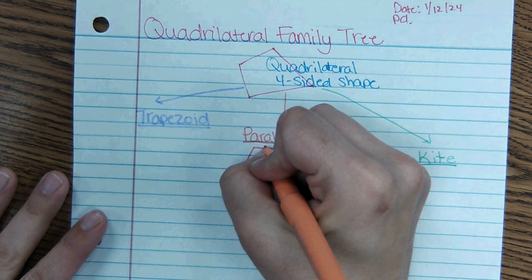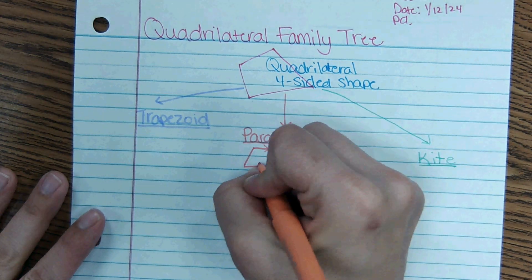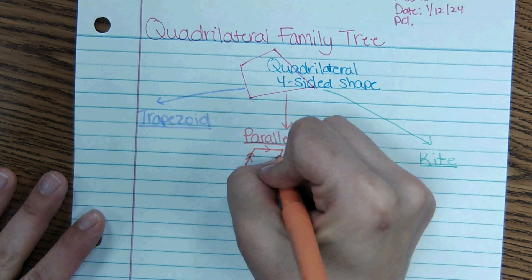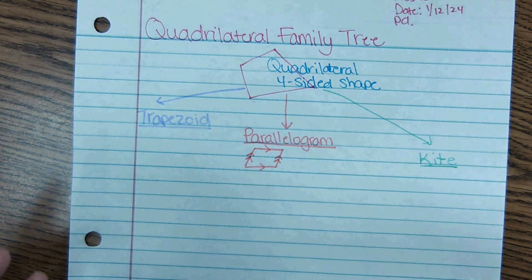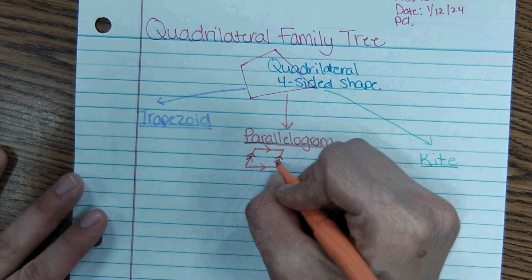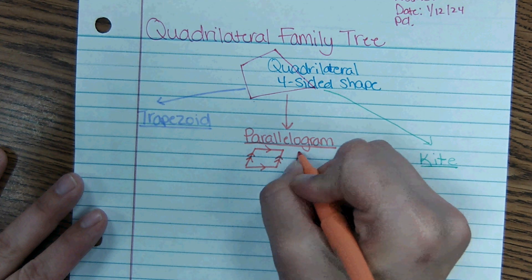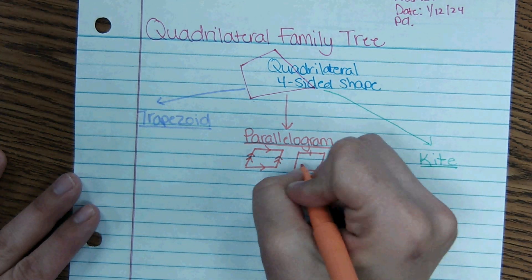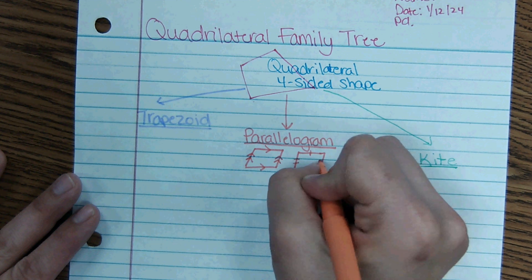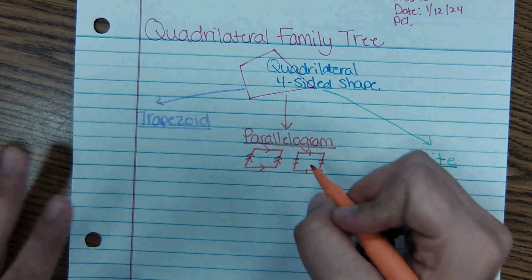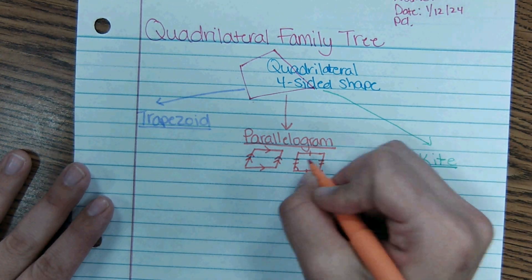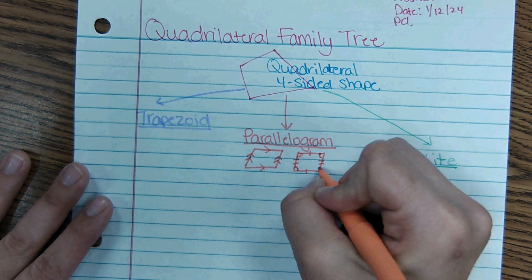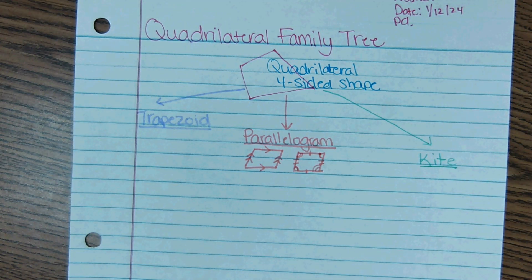A parallelogram is defined as a shape where the opposite sides are parallel — this side is parallel to this one, and this side is parallel to this one. When those conditions are met, other conditions follow: opposite sides are also equal, and opposite angles are congruent as well.